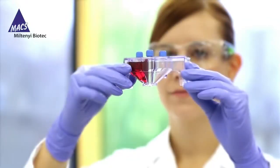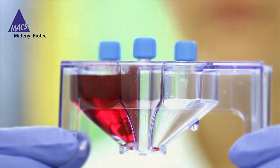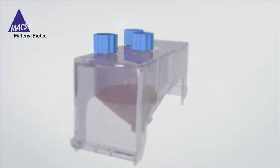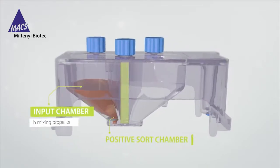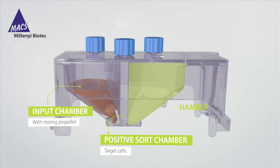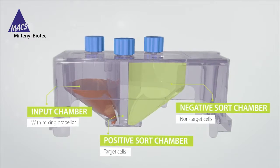The MACSQuant Tyto cartridge represents the heart of the MACSQuant Tyto Sorter. It is a fully closed system containing three chambers: an input chamber, a positive sort chamber where target cells are collected, and a negative sort chamber where non-selected cells remain after each sort.